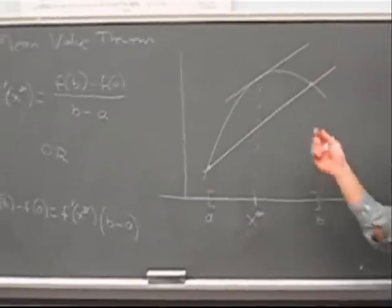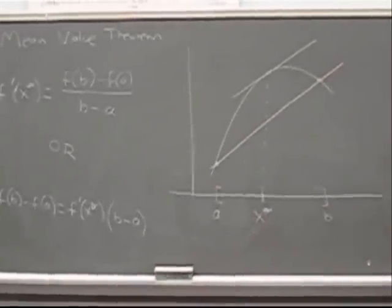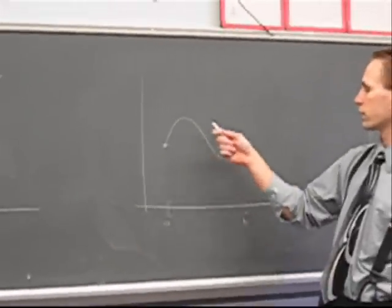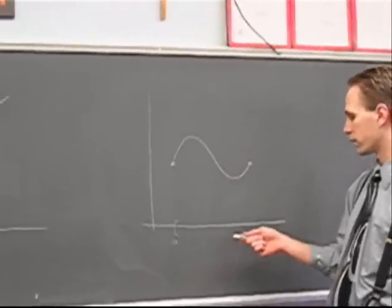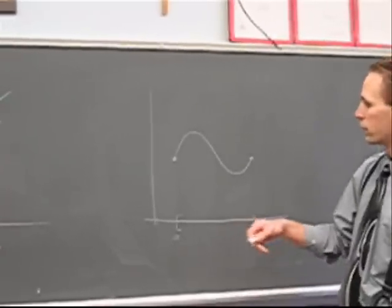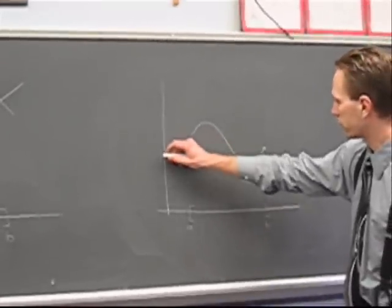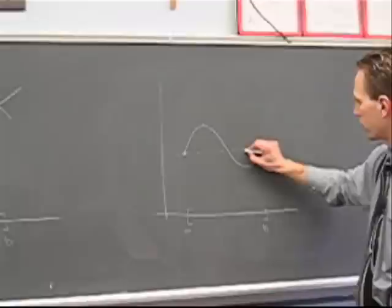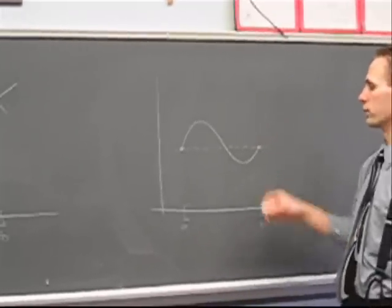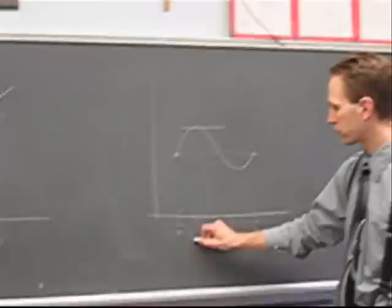So for any differentiable function that you draw, this can be done. For example, here I have another function that is defined, that is continuous on the closed interval and differentiable on the open interval. So there would be at least one spot where the derivative is equal to the slope of the average rate of change. So the average rate of change is about here. And as you can see, there's one spot. So there's one x star.